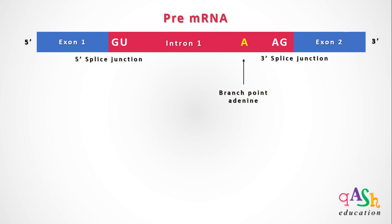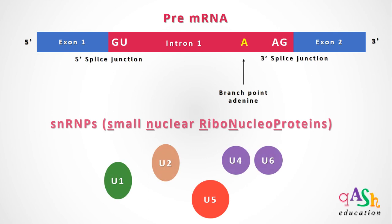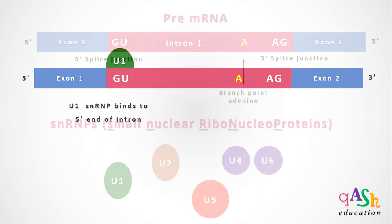This branch point adenine plays a crucial role in the excision of the intron from the pre-mRNA. The excision or splicing of the GU-AG intron requires the participation of special proteins called SNRPs — small nuclear ribonuclear proteins. These proteins are made up of RNA as well as an associated protein. The SNRPs that participate in GU-AG intron splicing are U1, U2, U4, U6, and U5.